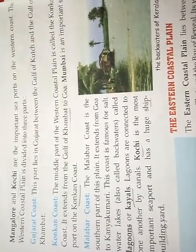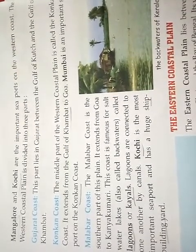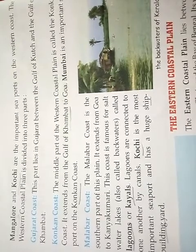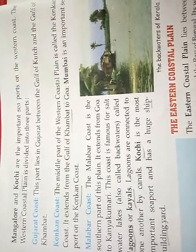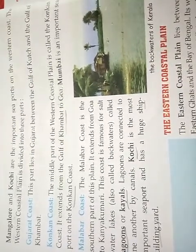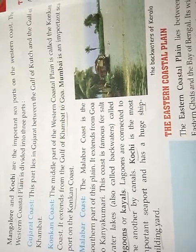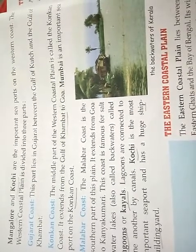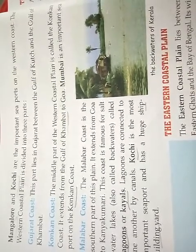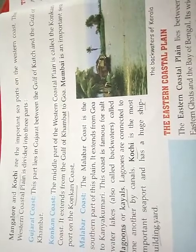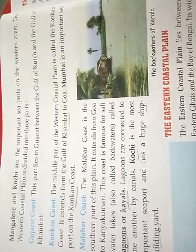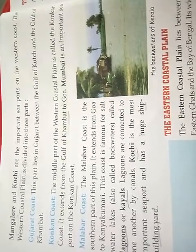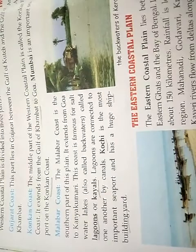The western coastal plain is divided into three parts. The Gujarat coast lies in Gujarat between the Gulf of Khambat and Gulf of Khambat. The middle part of the western coastal plain is called the Konkan coast. It extends from the Gulf of Khambat to Goa. Mumbai is an important seaport on the Konkan coast.